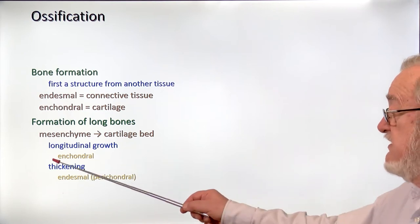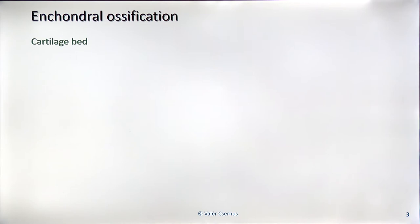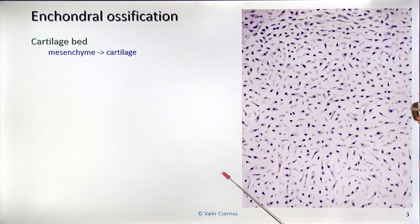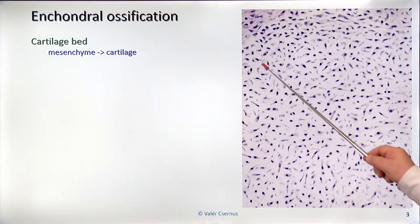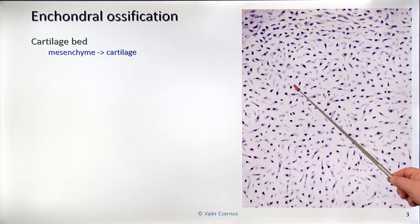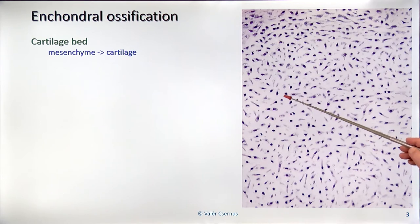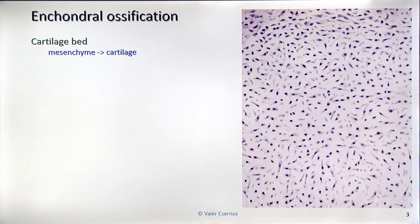Now let's describe in detail the enchondral ossification — how it happens. The first step is that the cartilage bed develops and the mesenchymal cells differentiate into cartilage cells. This is a very young cartilage. You can see many dividing cells here — these are practically mesenchymal cells. However, in between them you can see a couple of elongated cells. They are already differentiated into chondroblasts and chondrocytes, and this white area between the cells shows significant quantity of intercellular substance, which also shows the presence of differentiated chondrocytes.